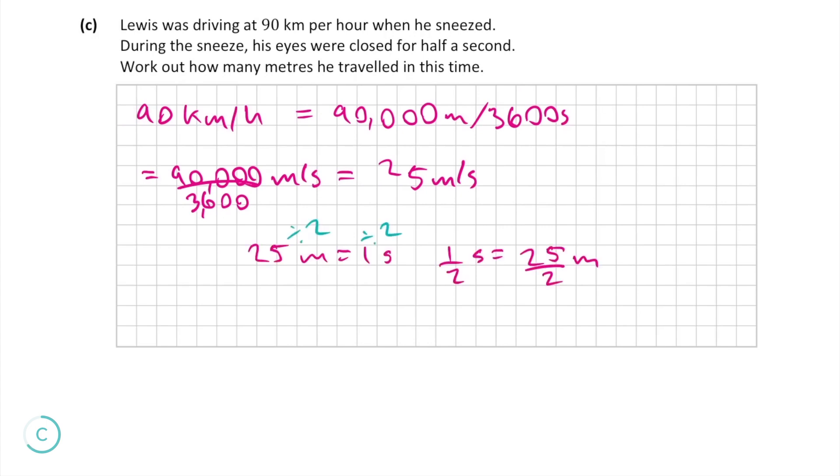So in 1 second he'll move 25 meters so if we divide both sides by 2 we get in half a second he'll move 25 over 2 meters which can also be rewritten as 12.5 meters.